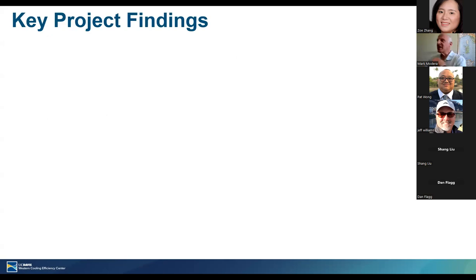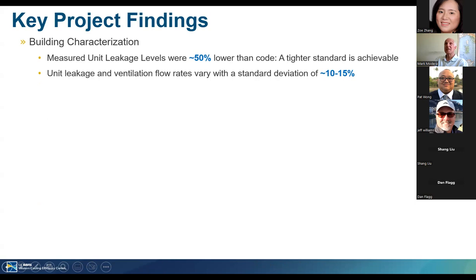I'll tell you all the key project findings right at the beginning and then spend some time backing those up. In terms of building characterization, the big takeaway was that the measured leakage levels were approximately 50% lower than code — meaning tighter — suggesting that a tighter standard is clearly achievable. Unit leakage and ventilation flow rates were fairly consistent, with a standard deviation of about 10 to 15%.